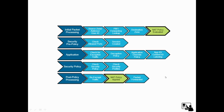This is the packet flow diagram in parallel to firewall. Here you can see we are using NAT policy at two places — one is at initial packet processing and the next one is as post policy processing.